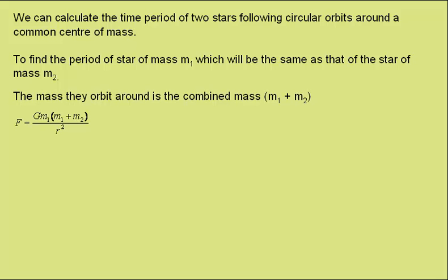Well, the force on the star of mass m1 would be given by Newton's universal law of gravitation, which is the gravitational constant multiplied by the mass of m1, multiplied by the mass of the common mass, m1 plus m2, over the distance of separation, r squared.